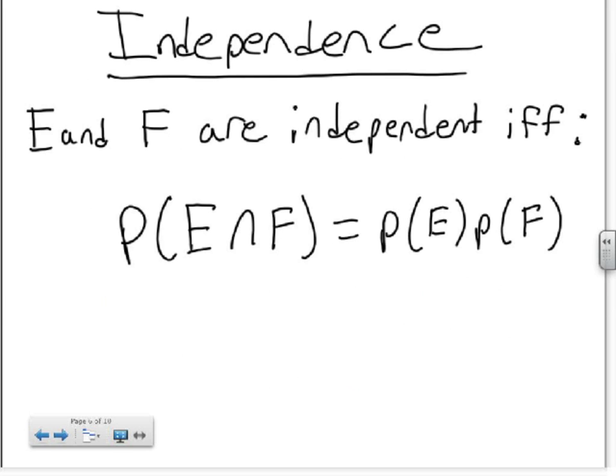Now, the second topic we're going to talk about is independence. You have two events, E and F, and you're going to say they're independent if and only if the probability that both events occur is equal to the probability of the first event multiplied by the probability of the second event.